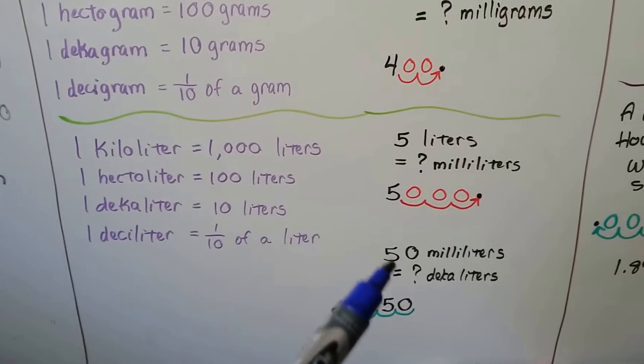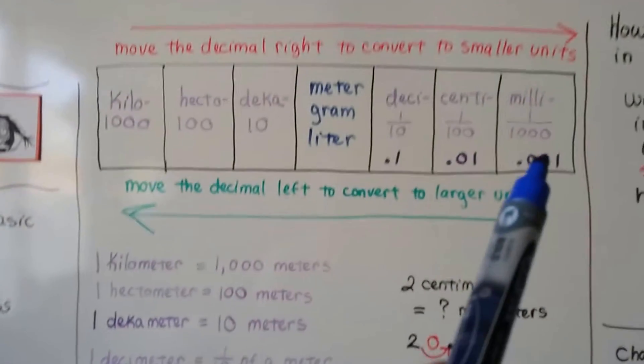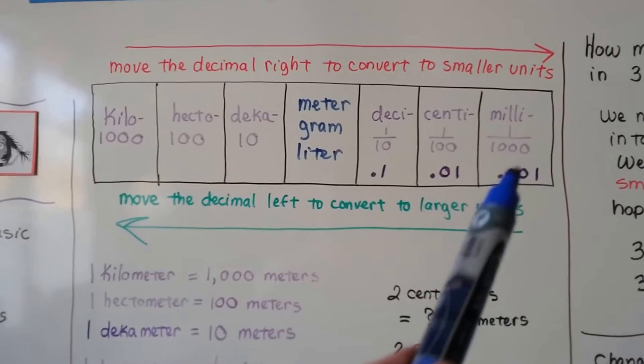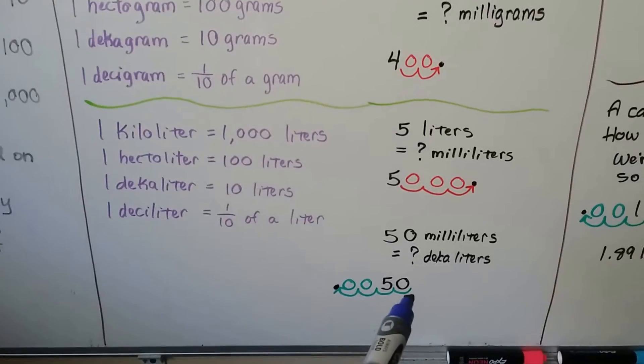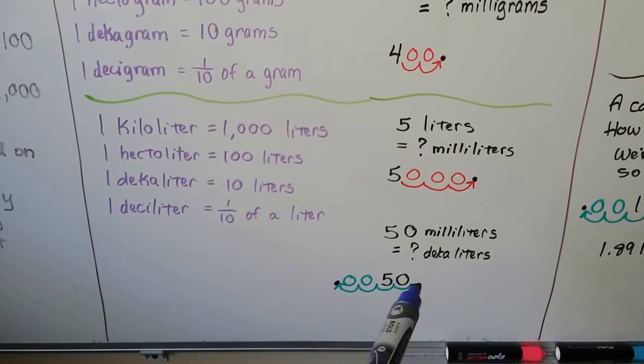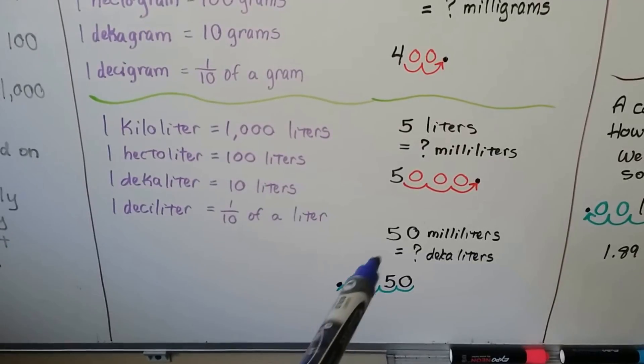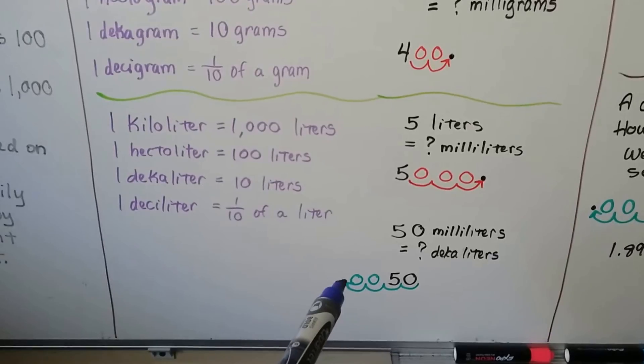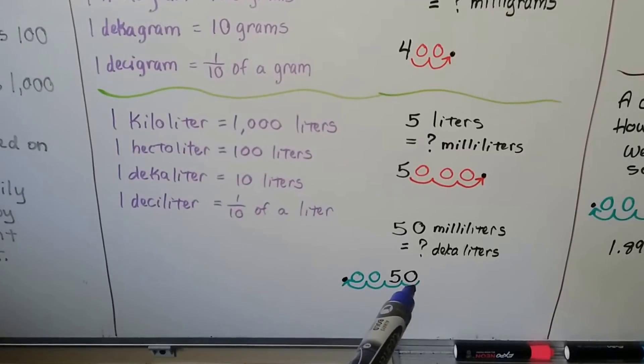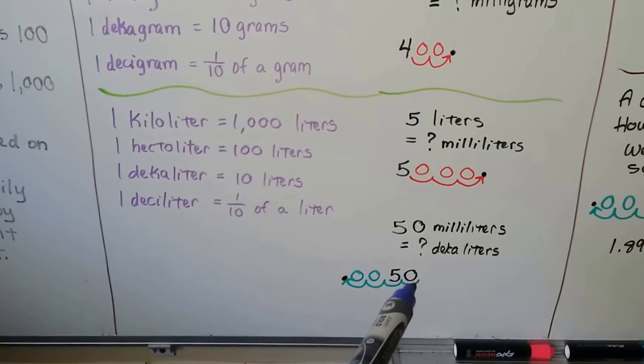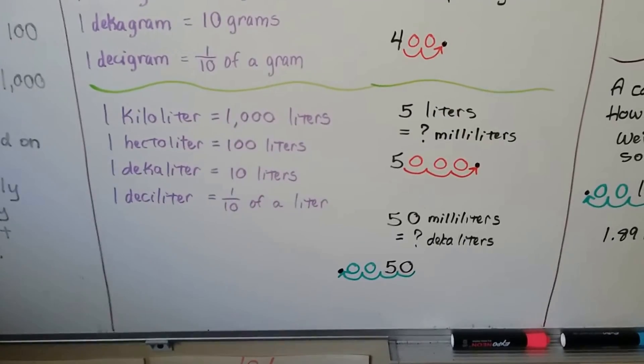If we have fifty milliliters and we want to convert it to decaliters, well, now we're going larger. We're at milliliters and we want to go to decaliters. We're going to go one, two, three, four hops. And the decimal point goes from back here behind the zero. One, two, three, four hops. We put in a couple zeros as placeholders. We know that 50 milliliters is equal to 0.005 decaliters. We don't really need that zero back here. We could use it, but we know on this side of a decimal, we don't need to put the zeros. We can put them there if we want to, but they're not necessary.